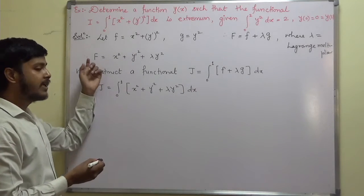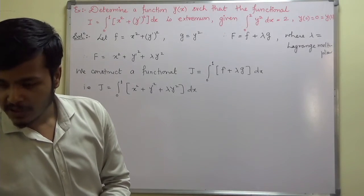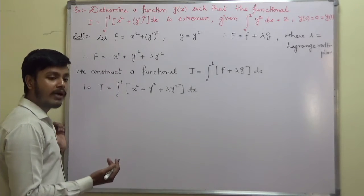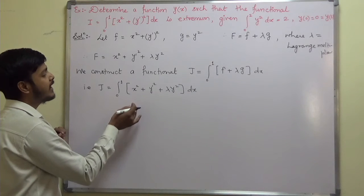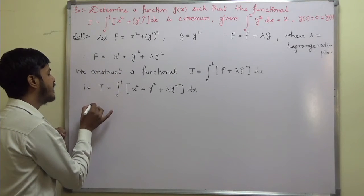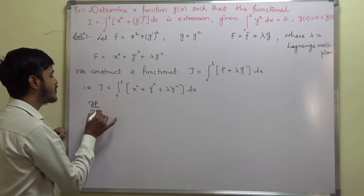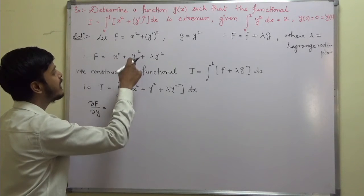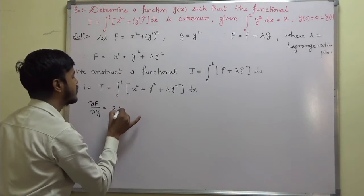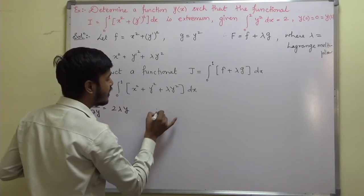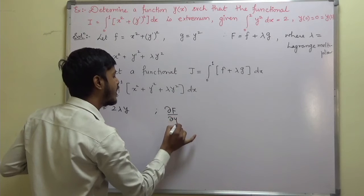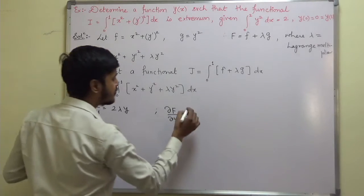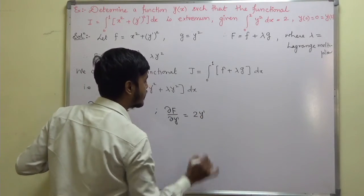Now, once you have F, you can write down the Euler's equation for the extremal. First, let us find del F by del y. There is a term in y, so del F by del y equals 2 lambda y. Now del F by del y-dash: there is a term in y-dash, so del F by del y-dash equals 2 y-dash.